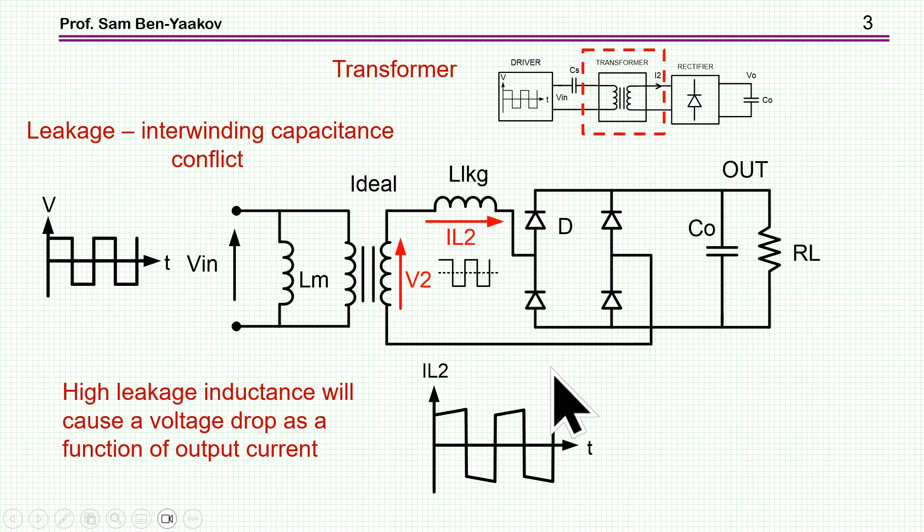A major problem with this simple power supply is the leakage of the transformer, because if the leakage is large, you have to charge and discharge it during each cycle. Consequently, you will lose some current and have a drop of the output as a function of load current. Unfortunately, the leakage is conflicting with another requirement to have very low capacitance between the windings to avoid injection of spikes from the secondary back to the primary. To get this low capacitance, you have to put the windings away, which increases leakage. There's a problem between these two opposite requirements.